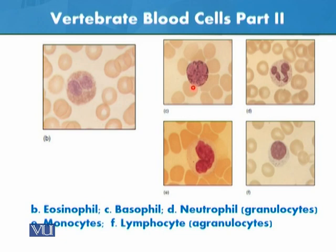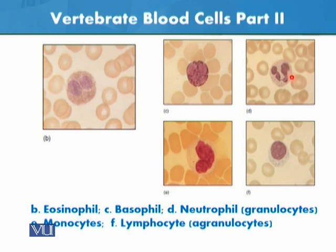Based on their staining properties and structure, we can identify eosinophils and basophils. Neutrophils are granulocytes; they have grains visible in the cytoplasm, and these granules have very important functions as they secrete certain substances. Monocytes can be identified by the shape of their nucleus.